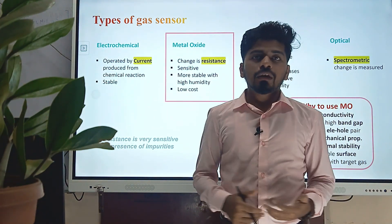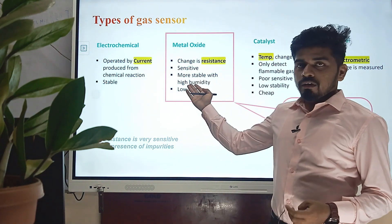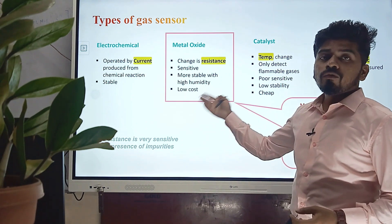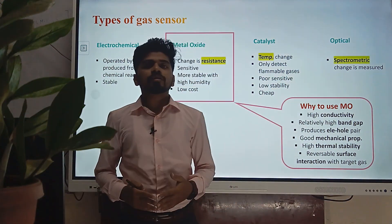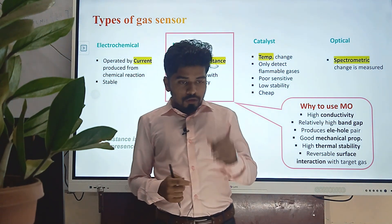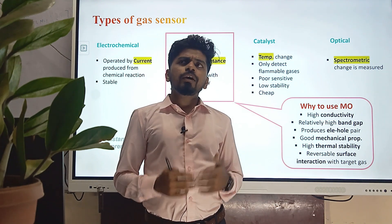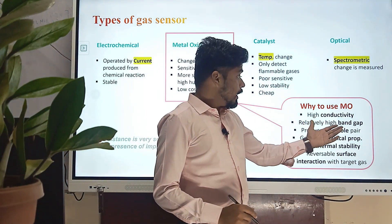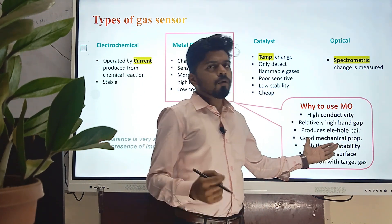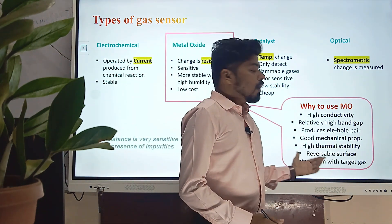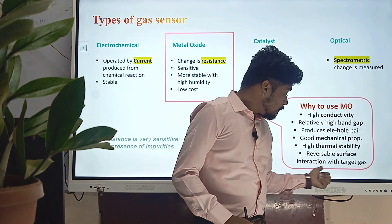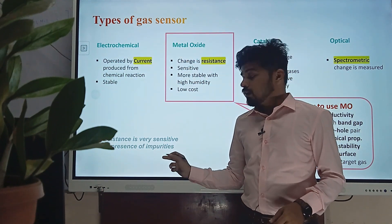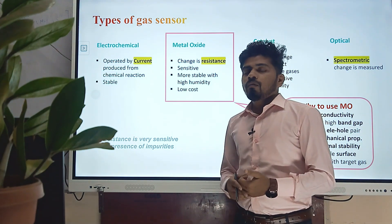I have personally chosen the metal oxide type because they are sensitive, they have very good stability with humidity, and of course they are low cost. Metal oxide materials show different properties than their pure metal form and are often treated as semiconductors. They have high conductivity, relatively higher band gap, they can produce electron-hole pairs, good mechanical properties, high thermal stability, and most importantly for sensing applications, reversible surface interaction with the target gas molecule is possible. Also note that resistance is very sensitive to the presence of impurities, which will be discussed in the doping slide.